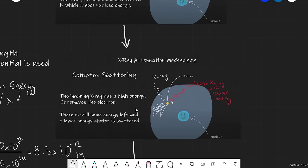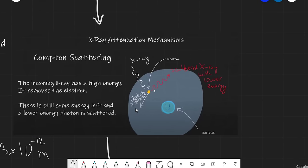The next interaction is Compton scattering, which occurs at higher energies. The incoming x-ray has enough energy to remove an electron. The electron is removed, and the original x-ray is absorbed. However, there is energy left over, so a lower energy x-ray is scattered in a different direction. With Compton scattering the x-ray is absorbed, but a remaining x-ray is scattered with lowered energy.